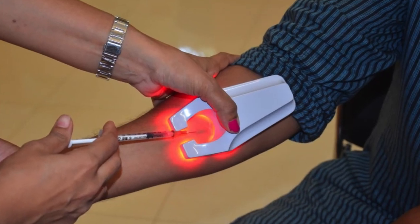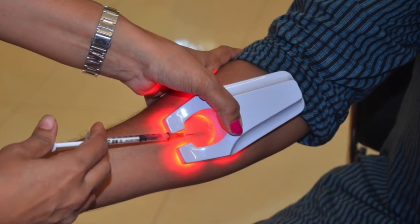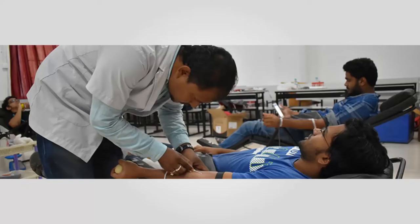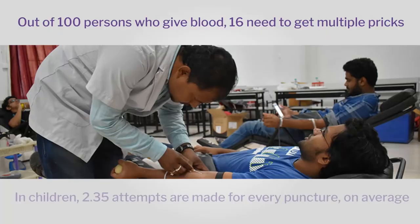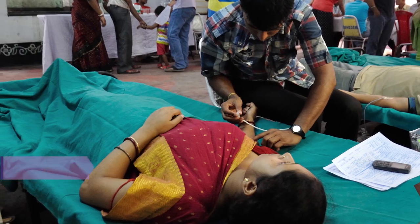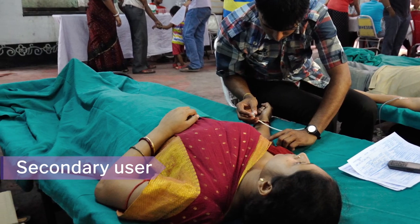We will see that happening in action in this project where we are working on a low-cost vein tracer. A vein tracer is relevant because when you go for blood donation and they want to take blood from your veins, they often need multiple pricks, which is painful — the average number of attempts in a child is 2.35. The target users here are doctors and caregivers, with patients as secondary users.